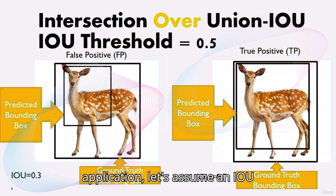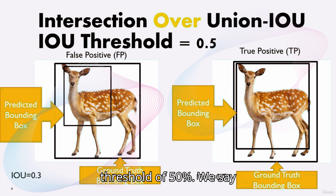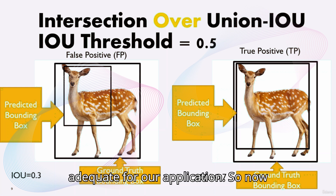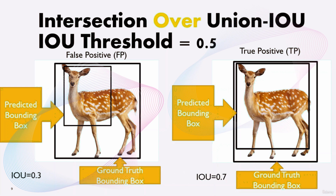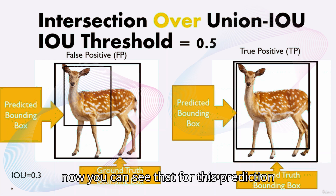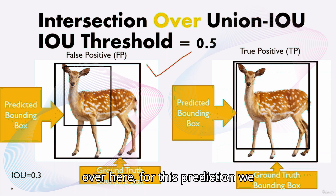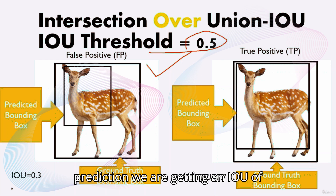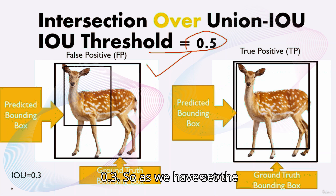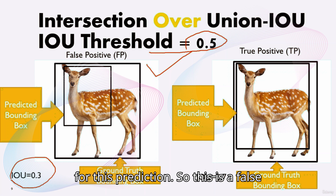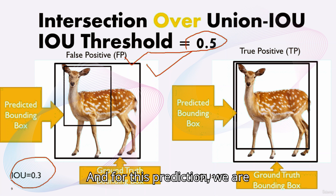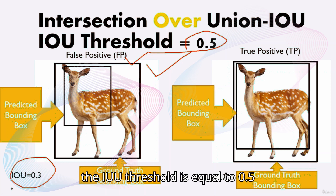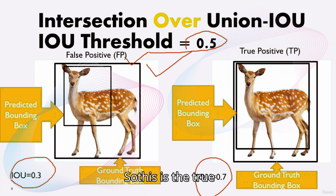Some people use an IOU threshold of 50%, but it all depends on how important the location of the object is to you. Please remember that we will have different results for different IOU thresholds. For this application, let's assume an IOU threshold of 50%, which is 0.5. For a prediction where we are getting an IOU of 0.3, since the threshold is 0.5, this is a false positive. For another prediction where IOU is 0.7, since it exceeds the threshold of 0.5, this is a true positive.